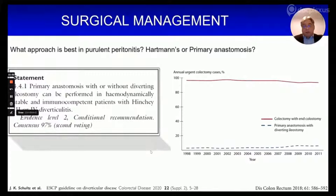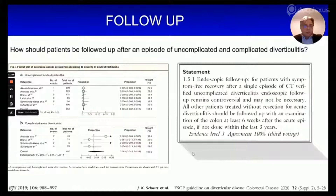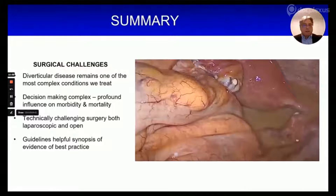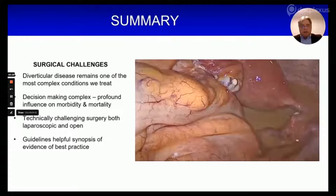Data from North America illustrates the low uptake of primary anastomosis in colorectal practice. Regarding follow-up after the acute episode: for uncomplicated diverticulitis, rates of colorectal cancer are very low and routine endoscopic follow-up is not needed. For complicated acute diverticulitis, the colorectal cancer rate is somewhat higher and endoscopic follow-up is still recommended. In summary, diverticular disease remains one of the most complex conditions we treat. Decision-making is complex and can profoundly influence patient morbidity and mortality. It is technically challenging surgery, and the ESCP guidelines are a helpful synopsis of the evidence for best practice.